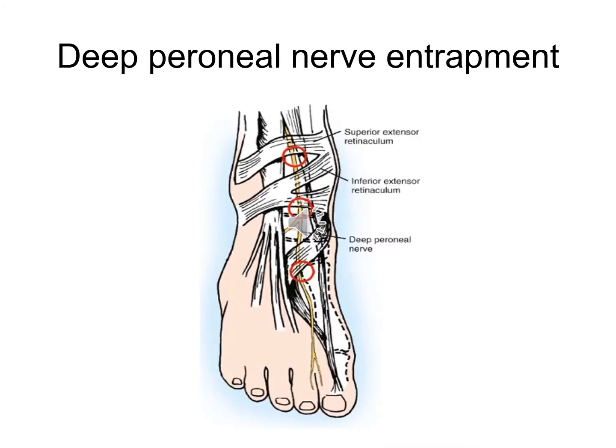The deep peroneal nerve, as it passes deep to the superior and inferior extensor retinaculum, can get trapped. This condition is called anterior tarsal tunnel syndrome.